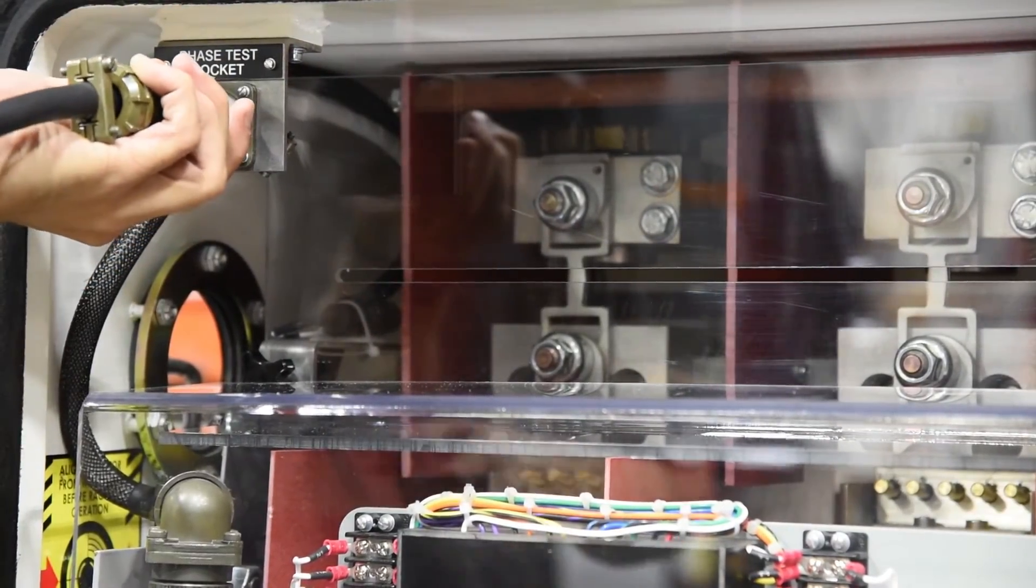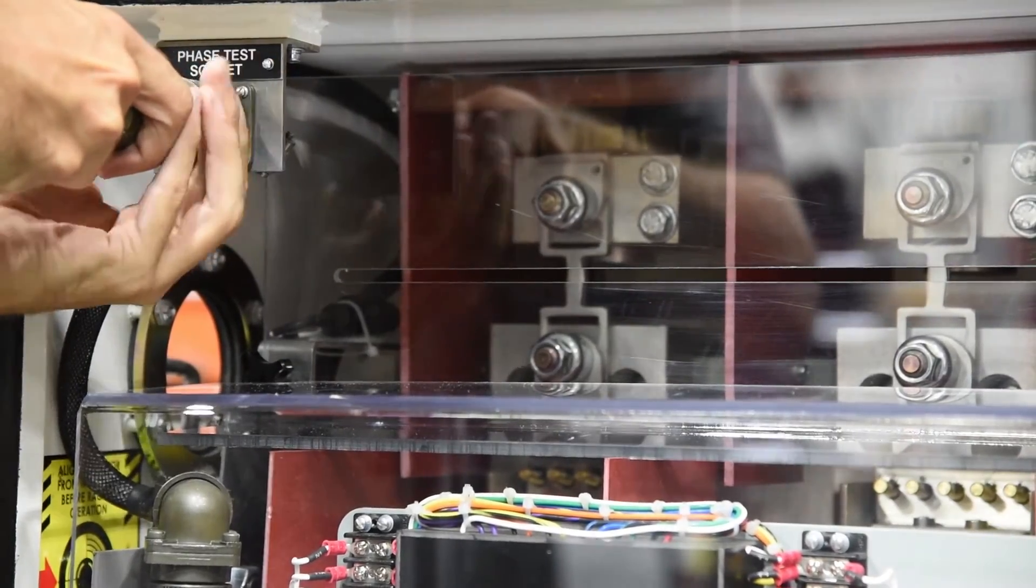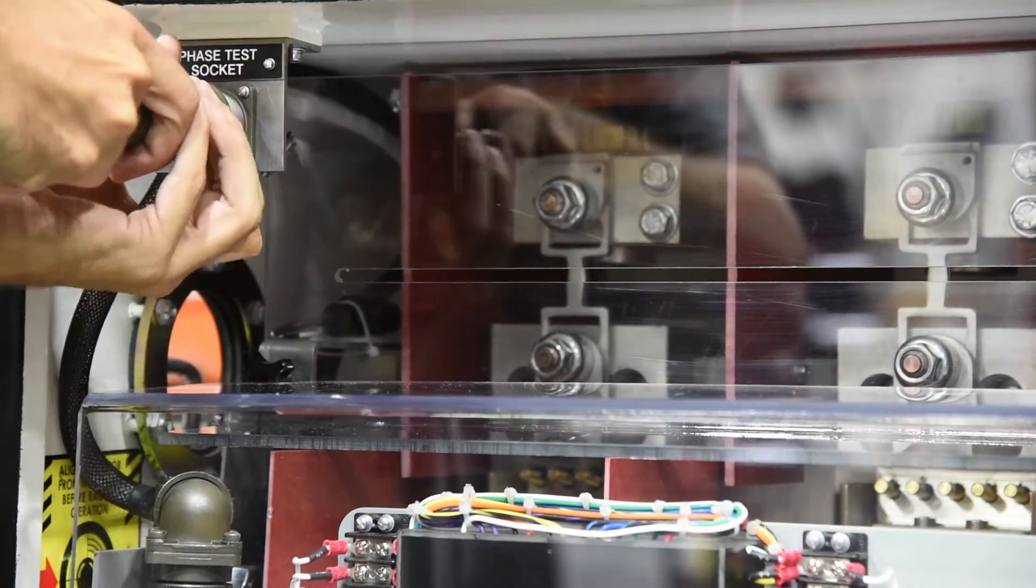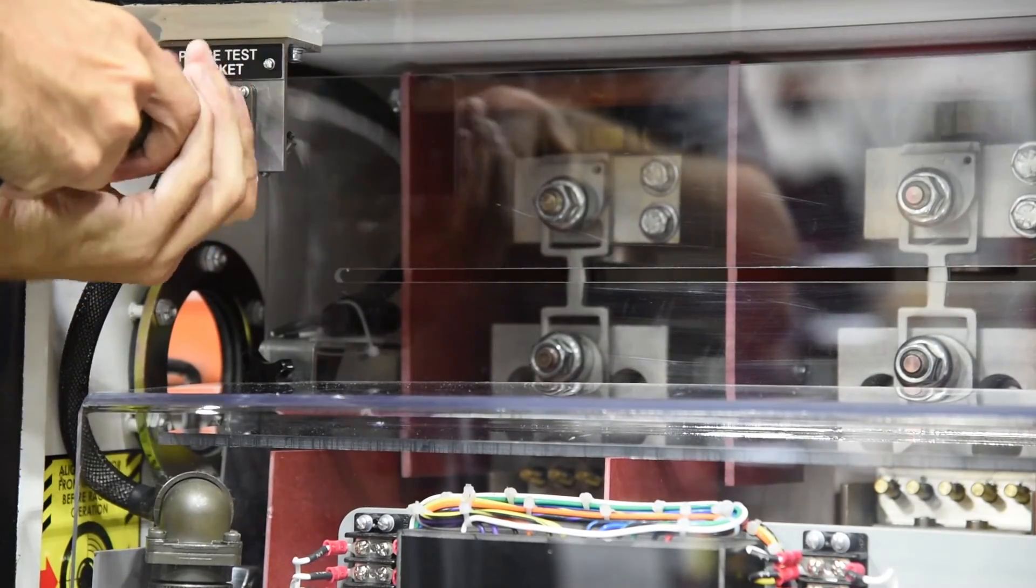An optional phase socket serves a dual purpose. It provides power to the ETI network protector test set and interfaces with an ETI phasing box to conveniently check phasing.